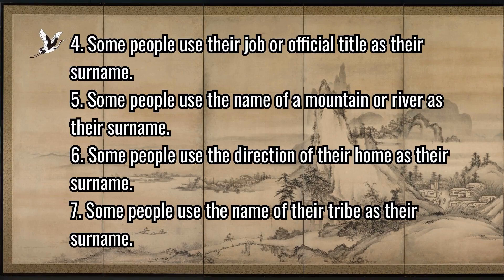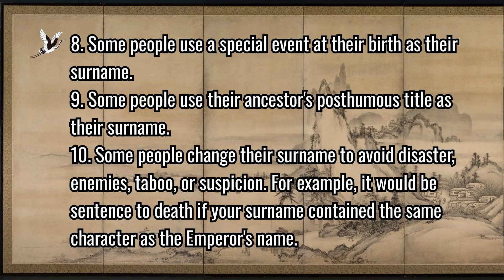Some people use their job or official title as their surname; some use the name of a mountain or river; some use the direction of their home; some use the name of their tribe; and some use a special event at their birth as their surname.